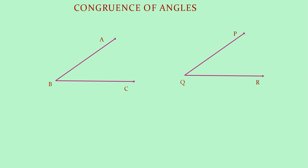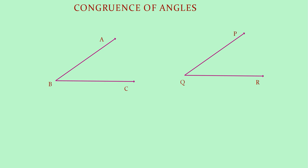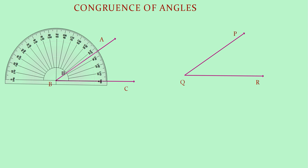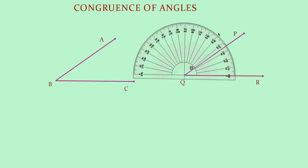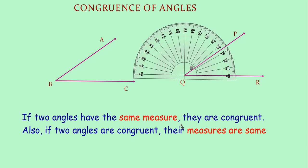Now let us check the congruence of angles. Consider angle ABC and angle PQR. Let us check whether these two angles are congruent or not. First take a trace copy of angle PQR — place Q on B and QR on BC. Now you can see it covers exactly. That means angle ABC and angle PQR are congruent. Angle ABC is equal to 35 degrees and angle PQR is also 35 degrees. That means if angles are congruent, their measures will be equal. That is, if two angles have the same measure, they are congruent. Also, if two angles are congruent, their measures are the same.